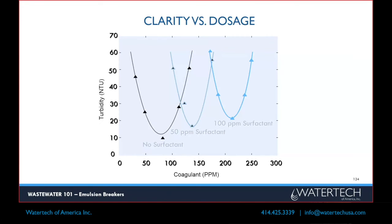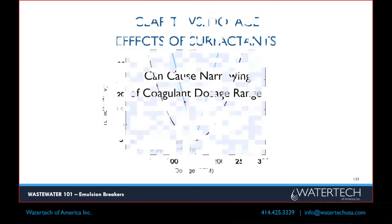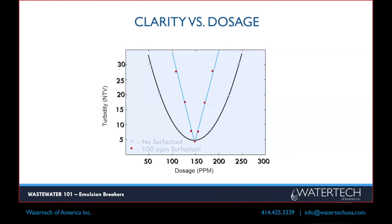So surfactants — just another graph showing turbidity versus the surfactant loading. As you can see, as the surfactant level goes up, you need to add more coagulant to counteract the surfactant. In some cases you have this narrowing effect where it'll only clarify when you're in that more narrow range — that's what the blue and the red dots show there. The outside curve is without surfactant. So it can give you a narrowing of where the chemical might be effective at clarifying the water.